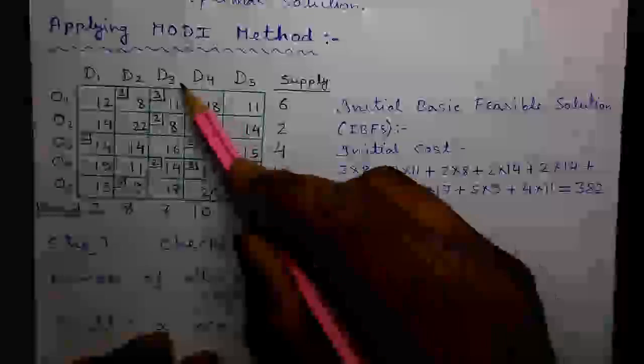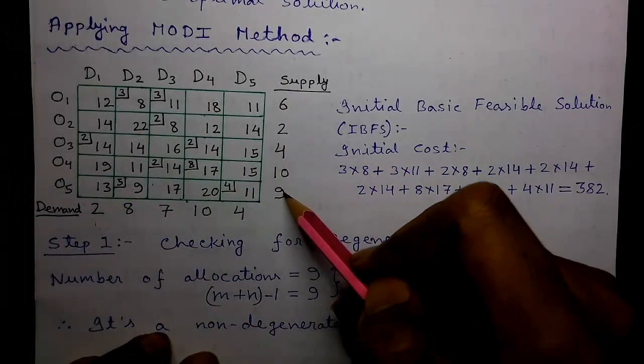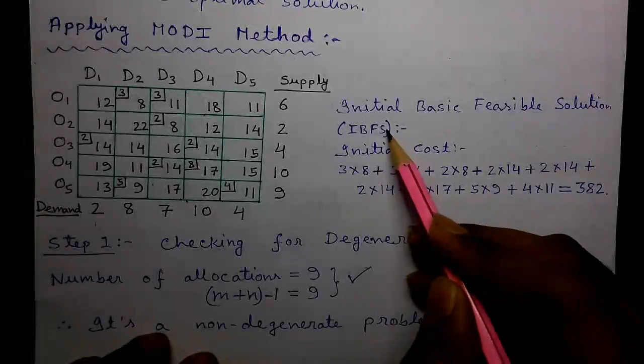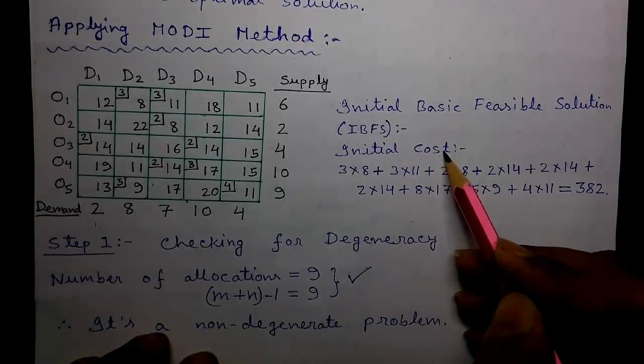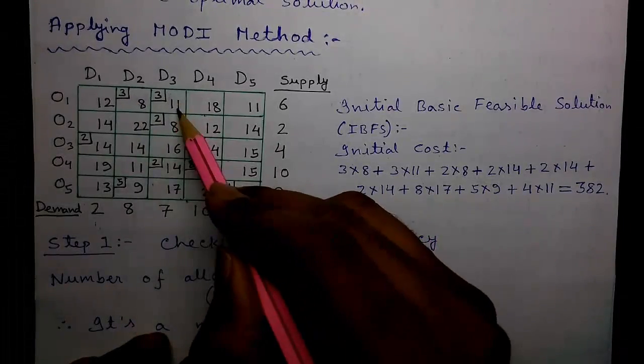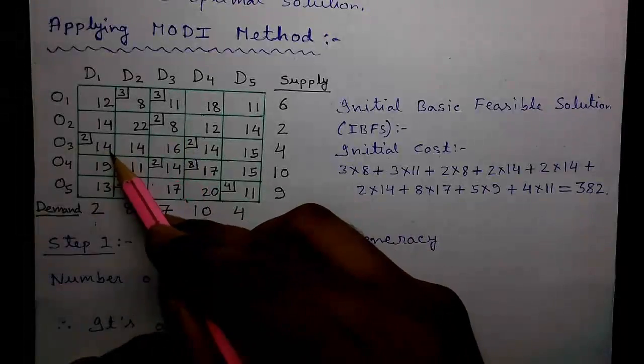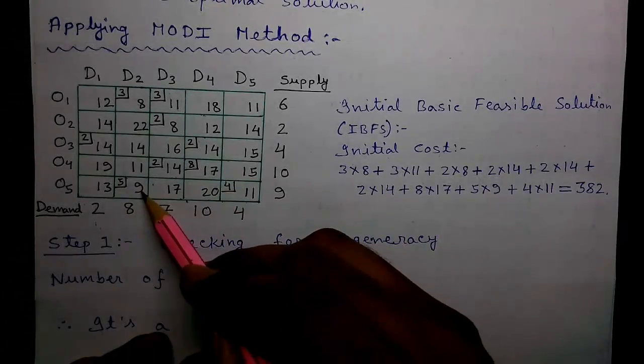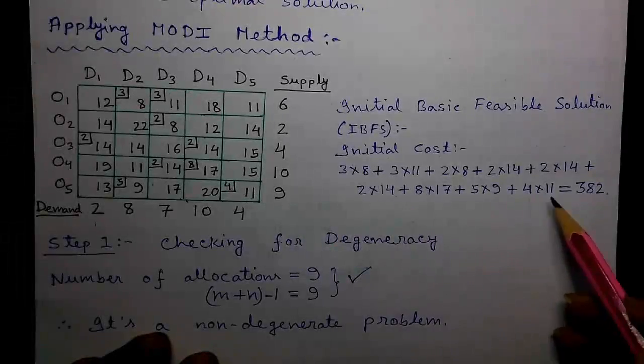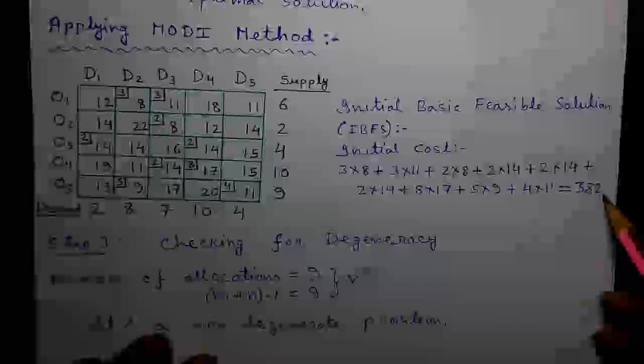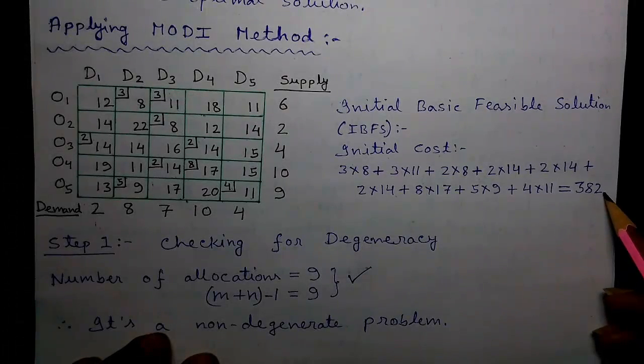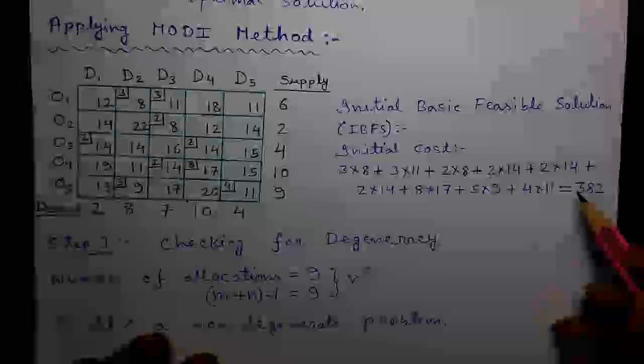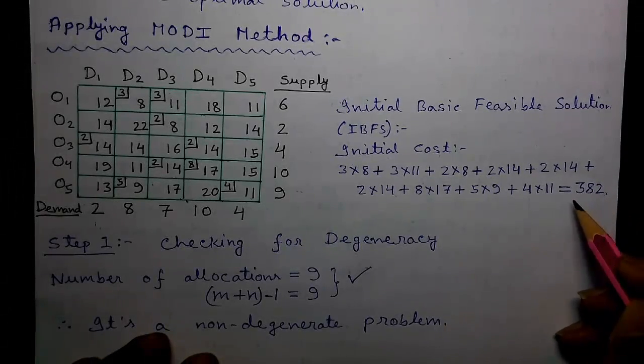Applying MODI method. So this is our original question. This is the IBFS obtained by the Vogel's Approximation Method or VAM. And our initial cost or initial total cost is given by 3 into 8 plus 3 into 11 plus 2 into 8 plus 2 into 14 plus 2 into 14 plus 8 into 17 plus 5 into 9 plus 4 into 11, that equals to 382. Now we will apply the MODI method and we will check whether we can decrease the total transportation cost from 382 to some extent.